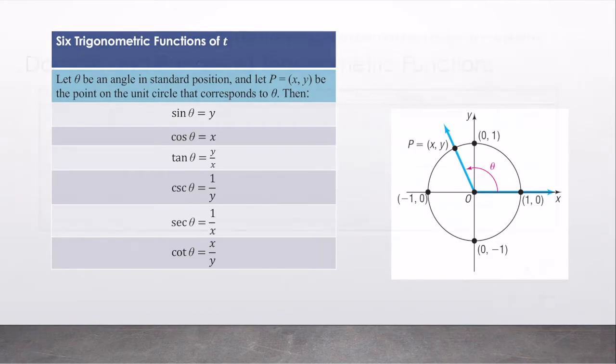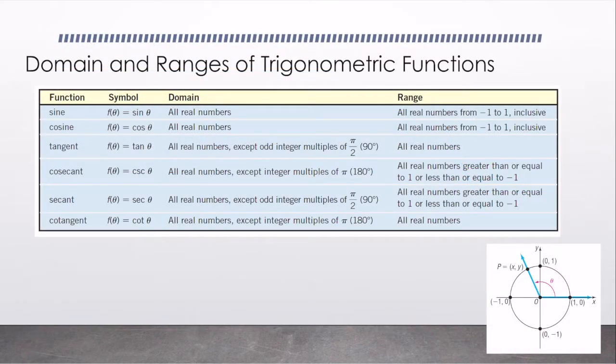Let's talk about the domains and ranges of trigonometric functions. Sine and cosine, their domain is all real numbers. We could plug in any real number and get a real value out. And their values, though, can only go from negative 1 to positive 1.